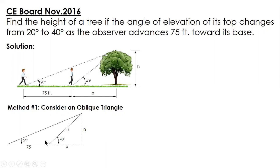First, find this angle. Since the given angle is 40 degrees, this interior angle is 180 minus 40, which equals 140 degrees. Then, considering the triangle with two known angles, we can solve for the third angle. We have 20 degrees.